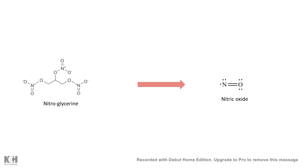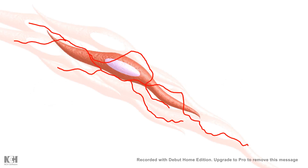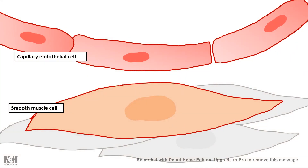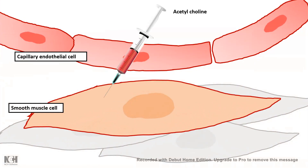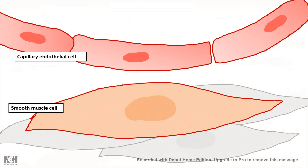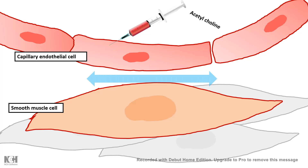Now let's understand how this happens at a molecular level. Here is a bundle of smooth muscle cells innervated by several blood vessels. People had a confusing observation: whenever they injected acetylcholine directly into the muscle cells by intramuscular injection, they saw the muscles contract — but whenever they injected acetylcholine into nearby blood vessels associated with the muscle, they saw the muscles relax instead. This was a totally opposite observation.